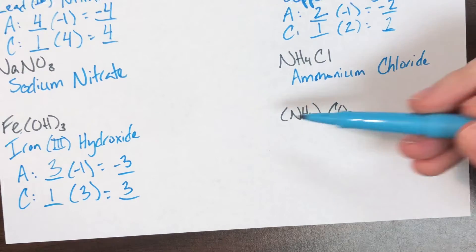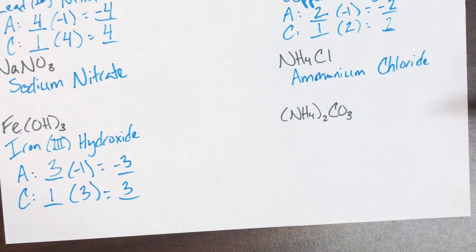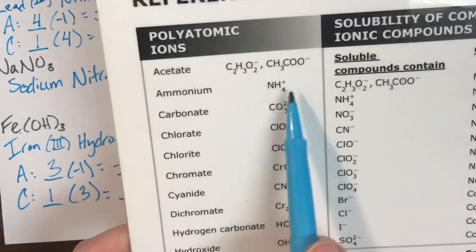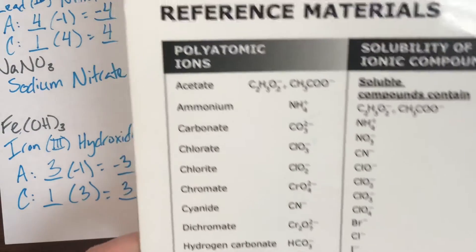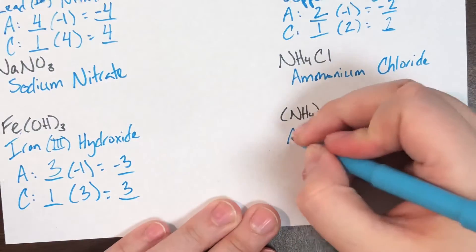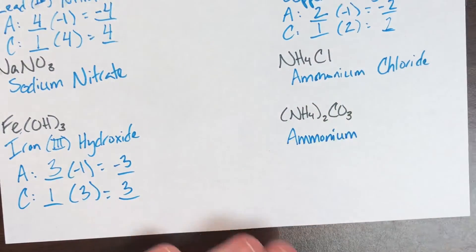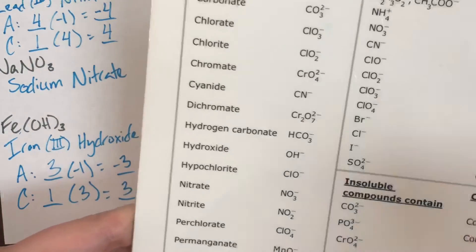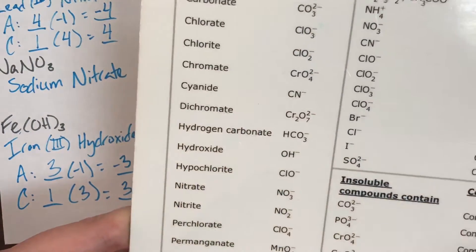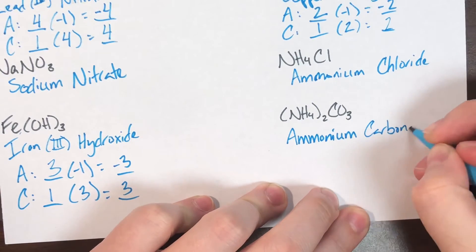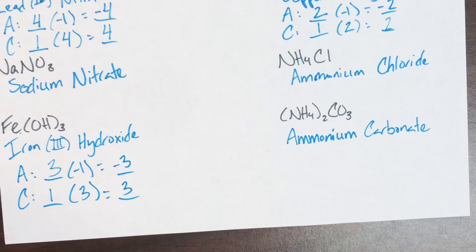The last practice problem is (NH₄)₂CO₃. NH₄ is ammonium, the one and only positive polyatomic ion. CO₃ is carbonate. Since both are polyatomic ions the naming is straightforward, giving the compound name ammonium carbonate.